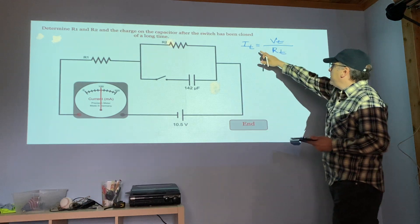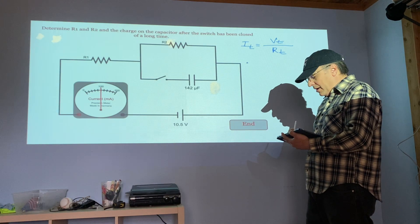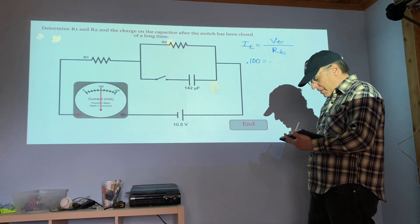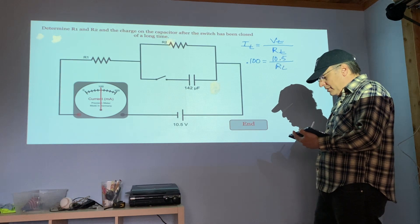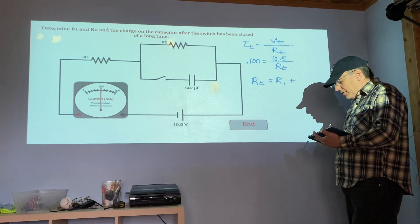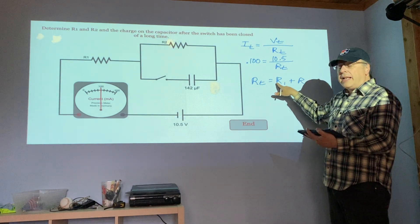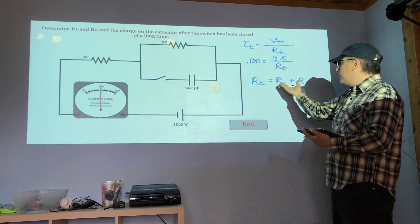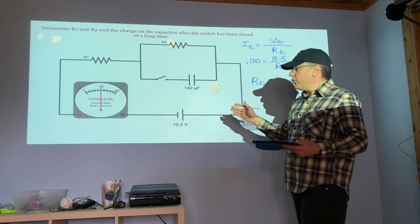With your I total equals V total over R total. Use that value which is about 100 milliamps, your voltage is 10.5, and you solve for R total. R total is going to be R1 plus R2. You cannot at this time solve for either one because they are both unknown values.